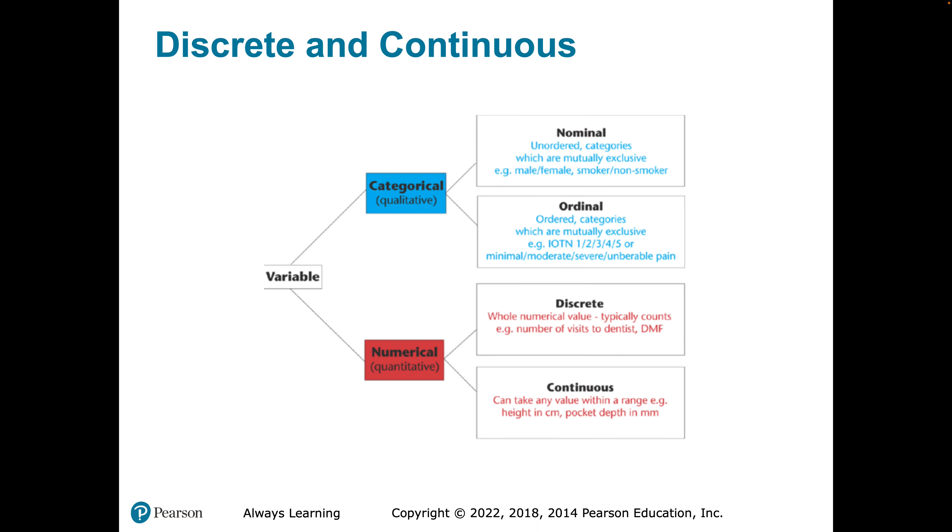Final thing — take a look at the diagram. Categorical breaks into nominal and ordinal. Numerical has a twist: we look at discrete and continuous, as we've discussed previously. A numerical discrete measure is a count; a numerical continuous measure is a measurement. Tattoo that one to the brain.